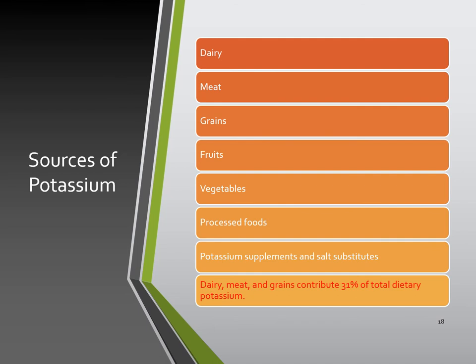Sources of potassium include dairy, meat, grains, fruits, vegetables, processed foods, and potassium supplements and salt substitutes. Dairy, meat, and grains contribute 31% of total dietary potassium in the American diet. Diuretics like hydrochlorothiazide, prescribed for high blood pressure, also force excretion of a lot of potassium, so those patients often have to take a potassium supplement as well.